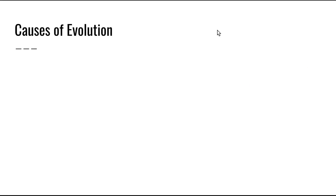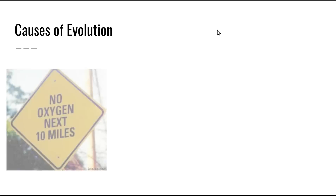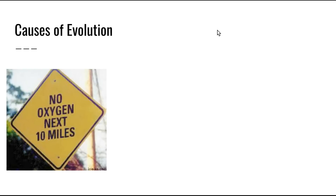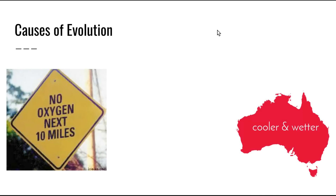Evolutionary change is based mainly on the interactions between populations of organisms and their environment. These interactions result in evolutionary adaptations, which are inherited characteristics that enhance an organism's ability to survive and reproduce in their particular environments. Environments on Earth have been changing since the Earth's formation — life first evolved in an atmosphere that had no oxygen, but since that time the composition of the atmosphere has changed significantly. In the past, Australia's climate was both wetter and cooler, but has changed as the continent has drifted north. During evolution, new kinds of organisms arise and others disappear due to environmental changes.